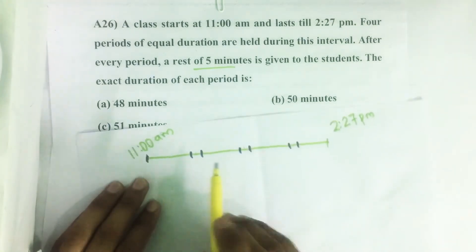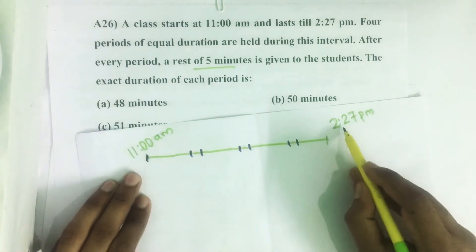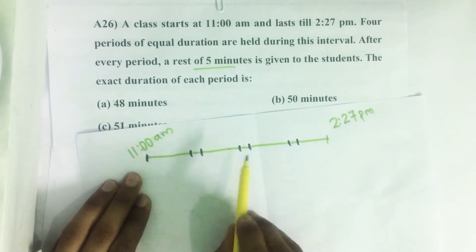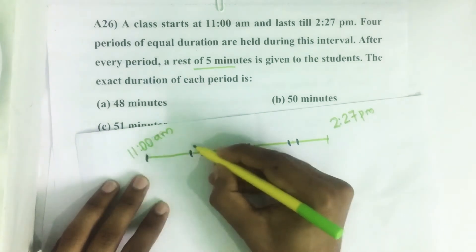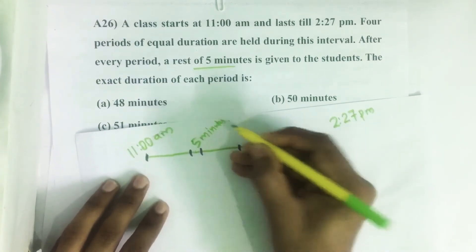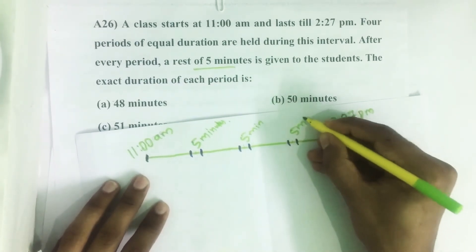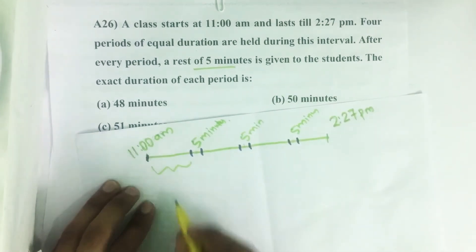So here it is given that class starts at 11 a.m. and ends at 2:27 p.m. In between this interval there are four classes, and after each class there is a five minute break. Then what is the duration of each class? That is what we have to find.